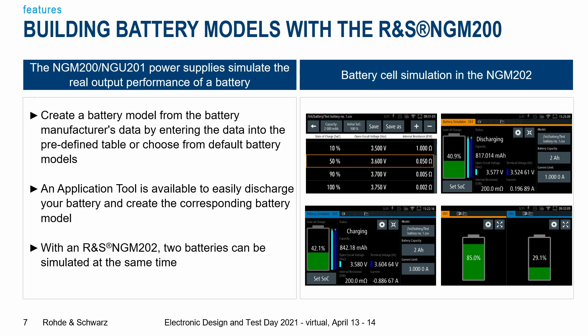So let me start with building battery models with the NGM and NGU power supplies. You first need to create your battery model so your device works exactly like a real battery. This can be done with different methods. One is to use the manufacturer's data and enter it into a predefined table — you put that data in and after loading the battery model, the power supply will behave exactly like your real battery. There are also some default battery files you can choose from and use without having any data at hand.